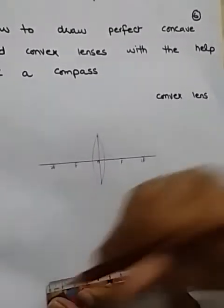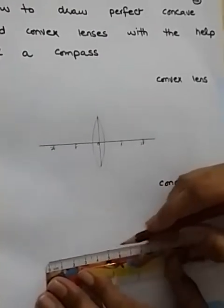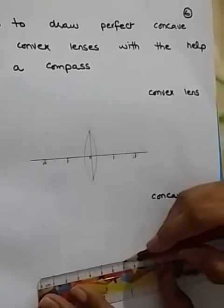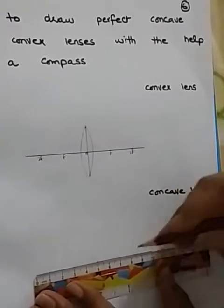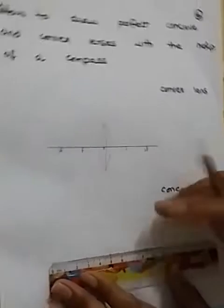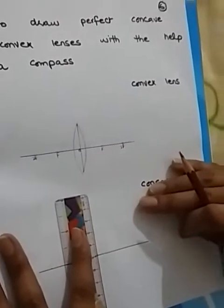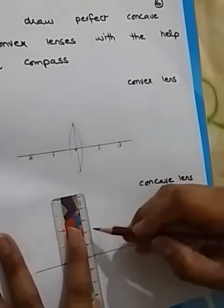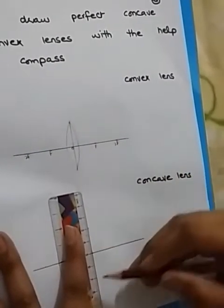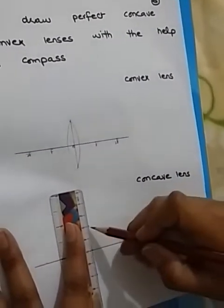2 centimeters on the left hand side and 2 centimeters on the right hand side, then again 2 centimeters. This is the middle. From the middle, 2 centimeters above and 2 centimeters below, and draw a line.